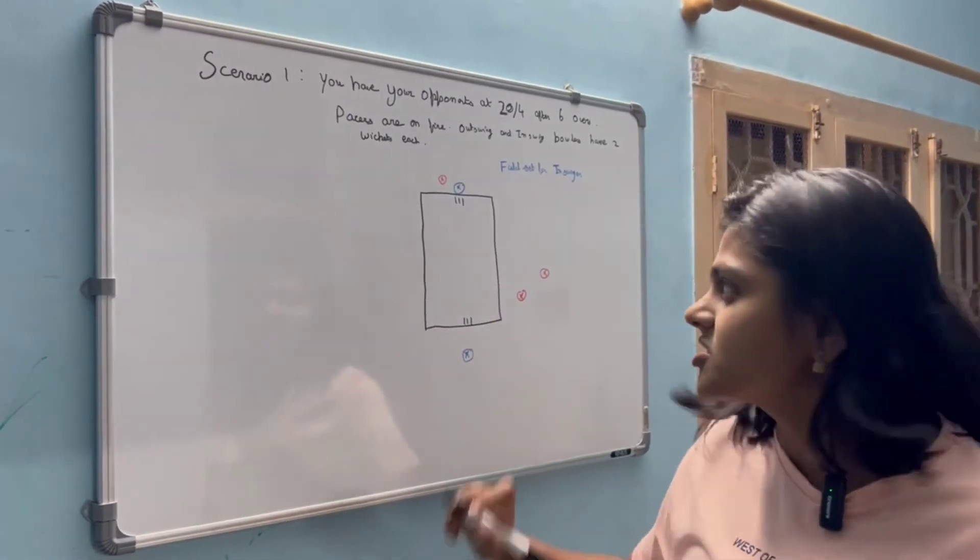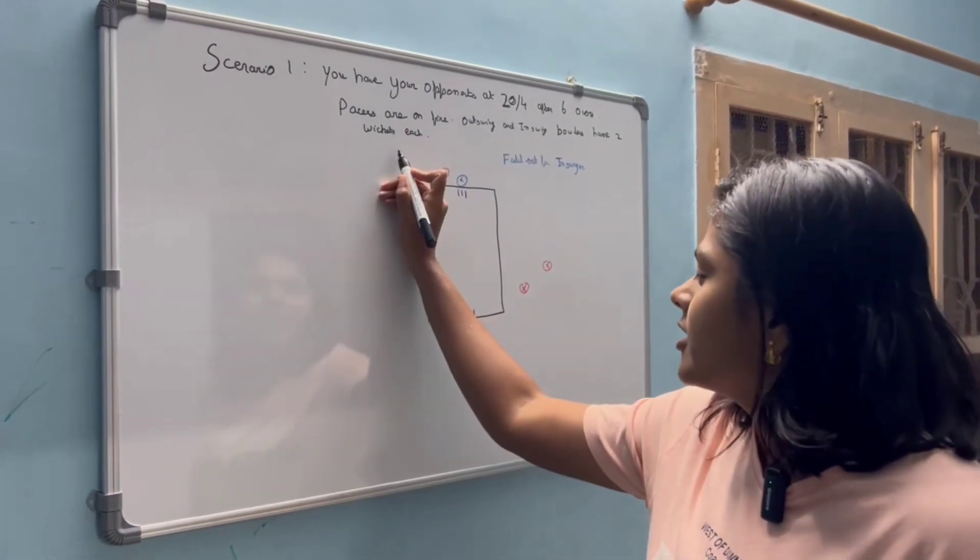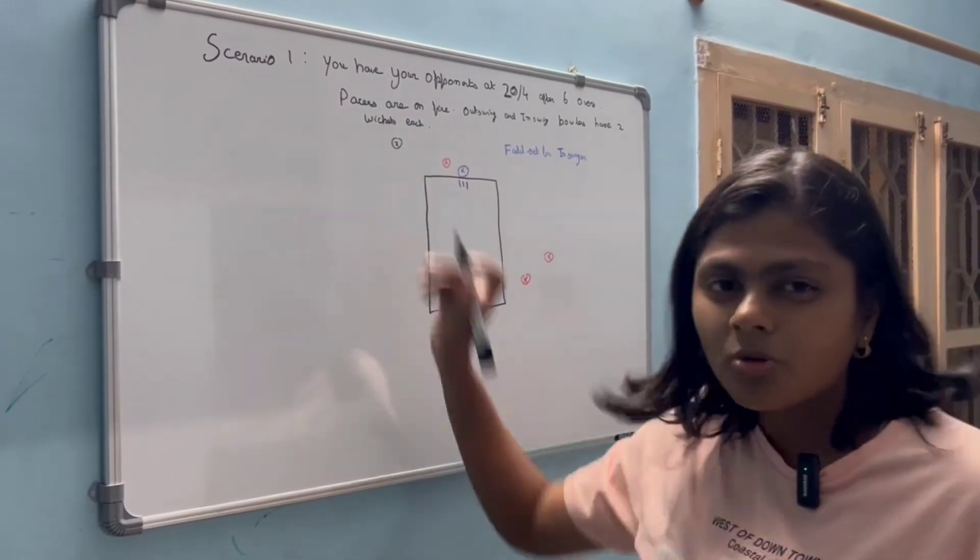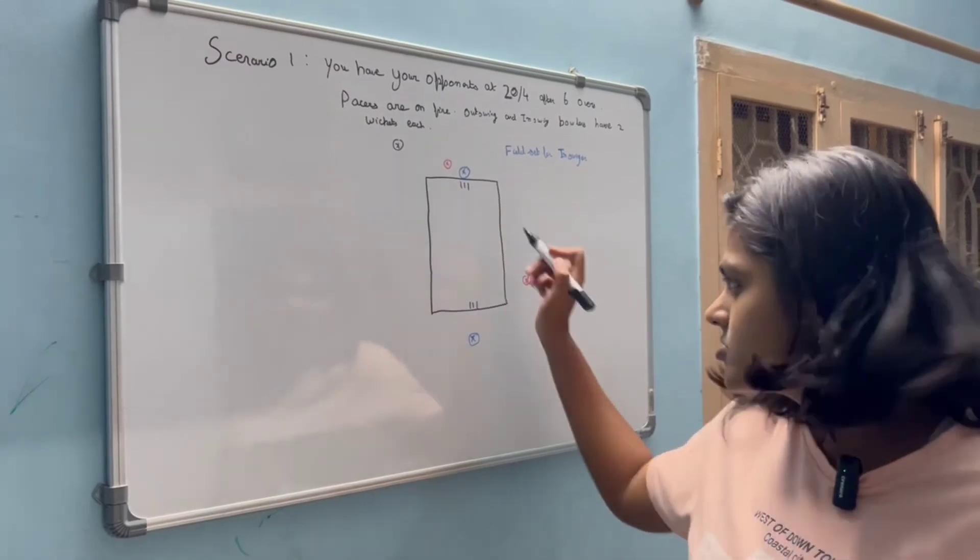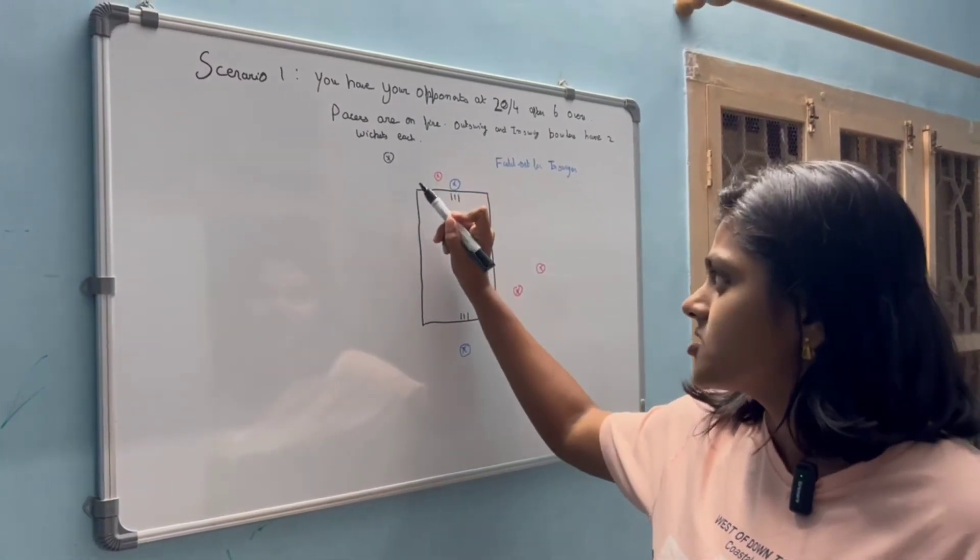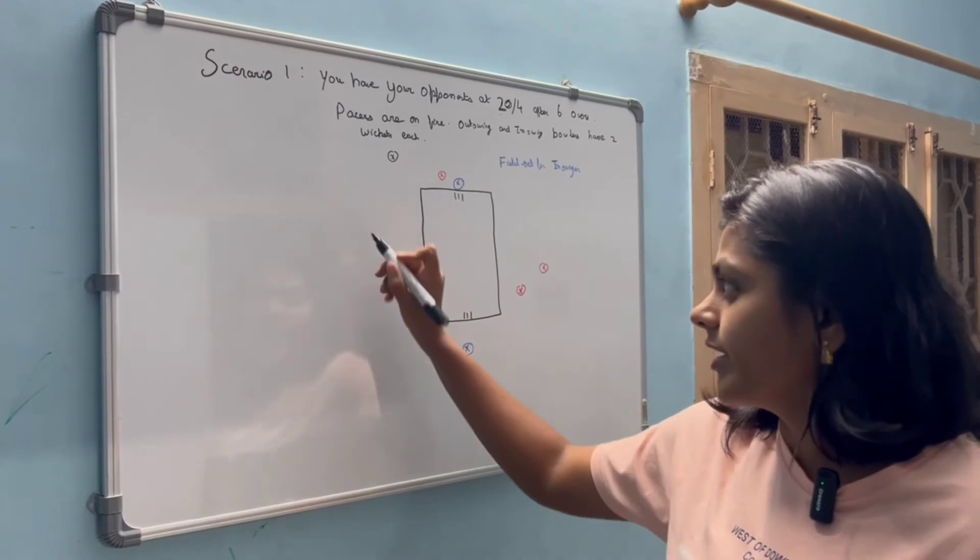So apart from the three catching positions to the right-handed batter I still have six fielders. First I will definitely have a third man probably at the three-fourths part of the ground because if the batter tries to play against the swing they might get a leading edge and that edge might not carry all over to the boundary line.